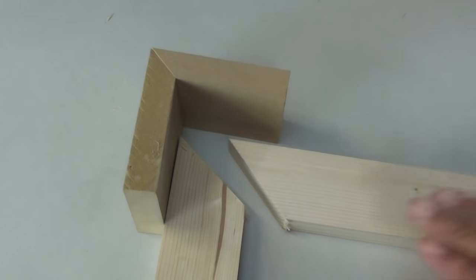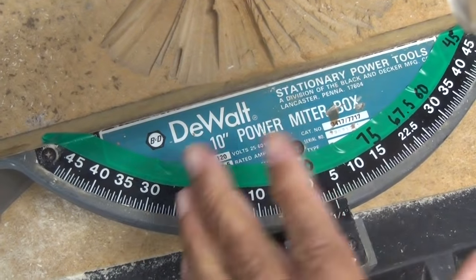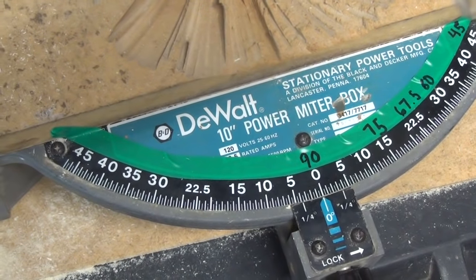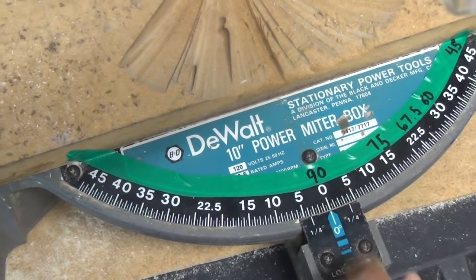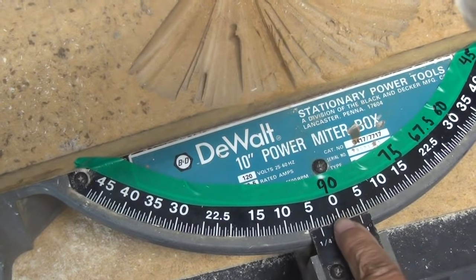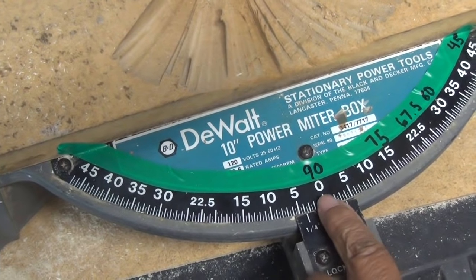And there's a reason for that. What I will say is most miter saws are not set up to do finished carpentry. So I've taken a piece of tape, and if you notice, on the miter saw it says zero, but on the piece of tape it says 90.